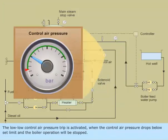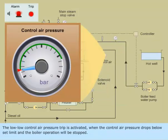The Low Low Control Air Pressure Trip is activated when the control air pressure drops below the set limit and the boiler operation will be stopped.